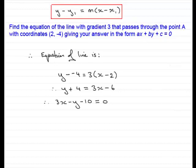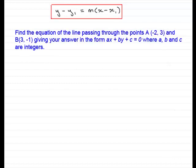Now, I'd like to run through another example with you. And in this example, we've got to find the equation in the line passing through the points A with coordinates (-2, 3) and the point B with coordinates (3, -1).